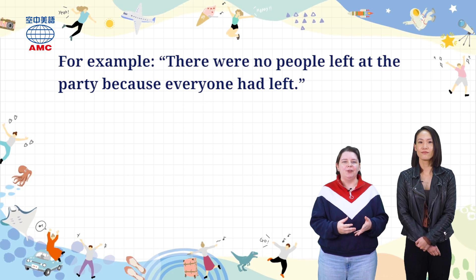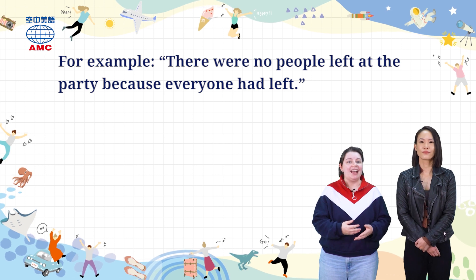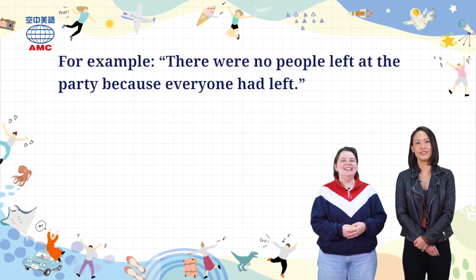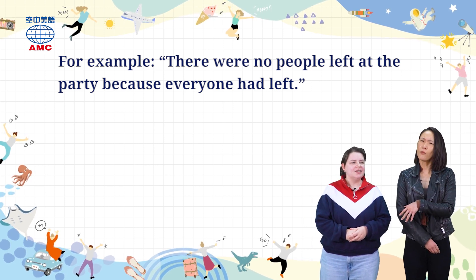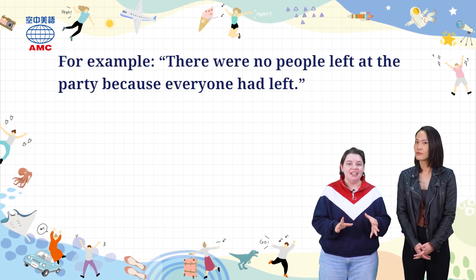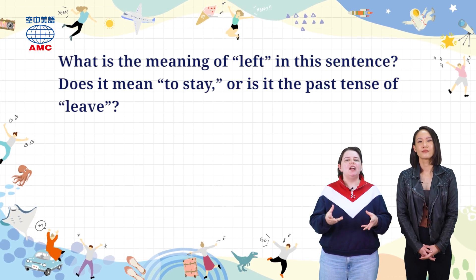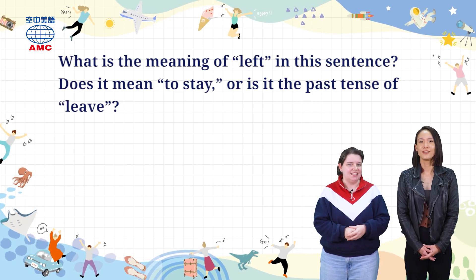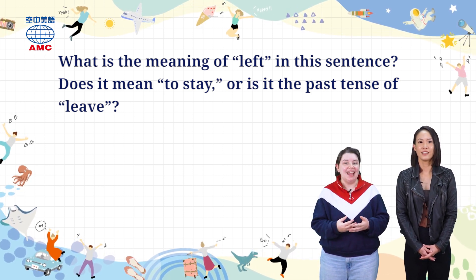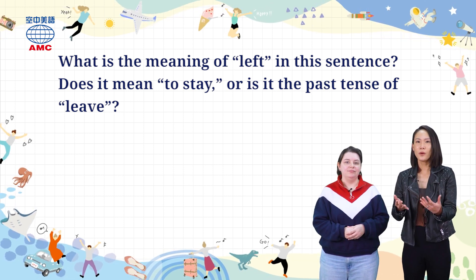The article gives us this example: 'There were no people left at the party because everyone had left.' It's a terrible party if no one's there! Why are there two 'lefts' in the sentence? Do they mean the same thing? The article asks: does 'left' mean to stay, or is it the past tense of leave? Let's find out what the article says.